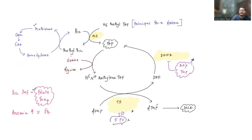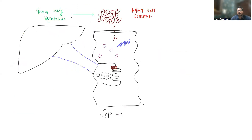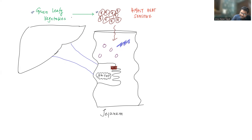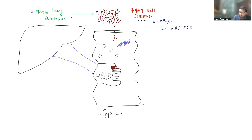Now let's see how folic acid is absorbed. In contrast to vitamin B12, folic acid is usually found in green leafy vegetables, unlike non-vegetarian foods for B12. In food items, folic acid is present in polyglutamate form. This is highly heat sensitive — if you fry food items for 5 to 10 minutes, it can destroy around 85 to 90% of the folic acid.